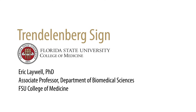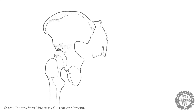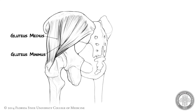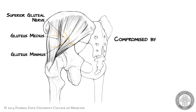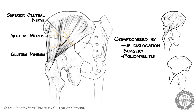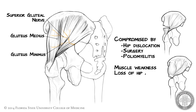The Trendelenburg sign results from unilateral, disrupted function of the primary abductor muscles of the hip, gluteus minimus and gluteus medius. Both muscles are innervated by the superior gluteal nerve, and their function can be compromised by damage to the nerve resulting from hip dislocation, hip surgery, or disease such as poliomyelitis. Direct damage to the muscle bellies or avulsion of their distal attachment from the femur can lead to weakness or loss of hip abduction.